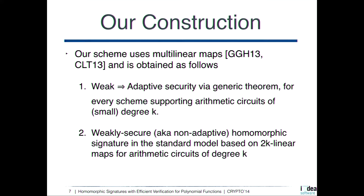Our construction is built in two steps. First, we show how to go from weak to adaptive security in a generic way for homomorphic signatures supporting arithmetic circuits of degree K. Then we instantiate this generic construction by proposing a weakly secure homomorphic signature in the standard model, based on 2K-linear maps for arithmetic circuits of degree K.